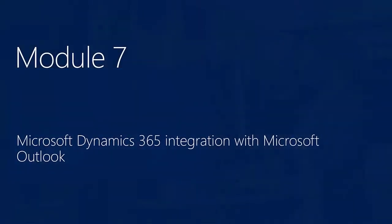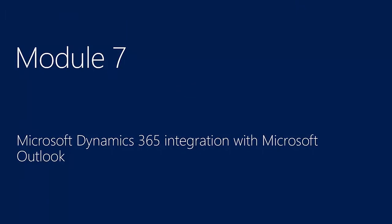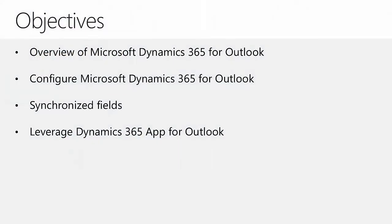In Module 1, we talked about ways in which users can connect to Microsoft Dynamics 365, and we spent a few minutes talking about Microsoft Dynamics 365 for Outlook client and the Dynamics 365 App for Outlook solution. In this module, we will dive deeper into these two solutions. We will discuss the installation and configuration process, how to review synchronized fields, and how to leverage the Dynamics 365 App for Outlook.